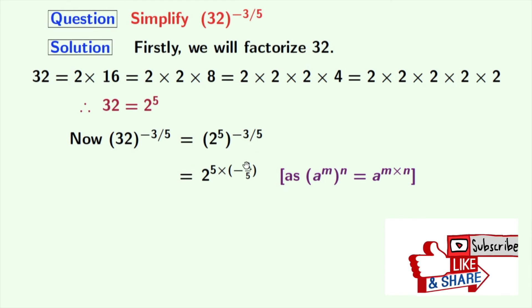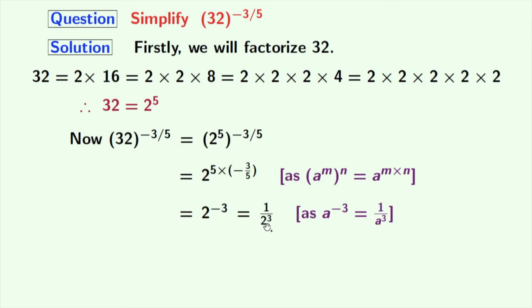Now we will simplify the power. Doing that we get 2 power minus 3. Now we can express it as 1 by 2 power 3. As we know that a power minus 3 is equal to 1 by a power 3. Here a is 2.